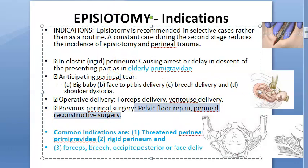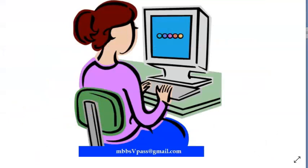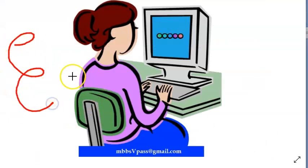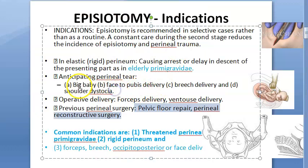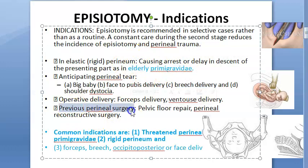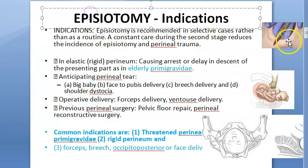If these patients have had pelvic floor repair or perineal reconstructive surgery, you definitely do not want to overstretch it. So the indications of episiotomy are: big baby, shoulder dystocia, face-to-pubis presentation, breech delivery, elderly primigravida, previous perineal surgery, and operative delivery where you want to use instruments. In all these cases you can do an episiotomy.